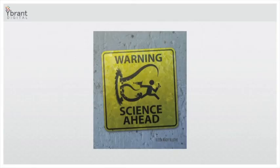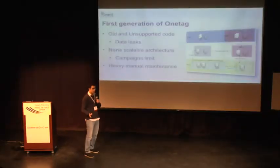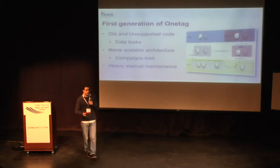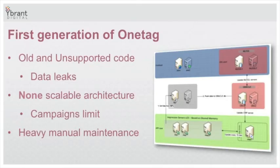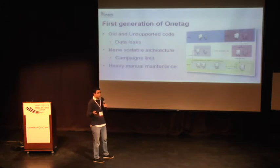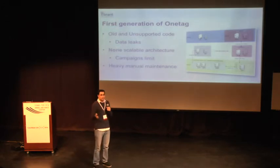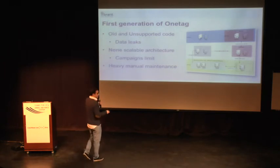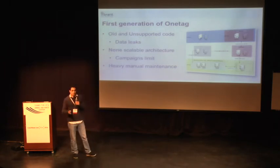Now let's get into technical details of how Couchbase is connected to this story. We started from the first generation of OneTag, which originated six years ago and was developed in C code. This code was old and unsupported; all the developers had already left the company or switched positions. It had many data leaks, was non-scalable — we could scale up but not scale out — had a hard-coded campaign limit, and required heavy maintenance every day just to keep it alive.